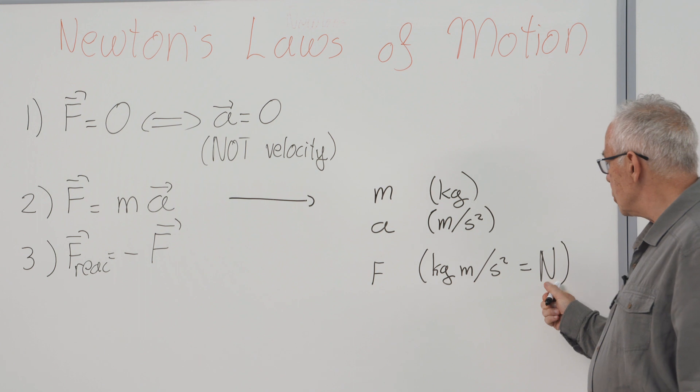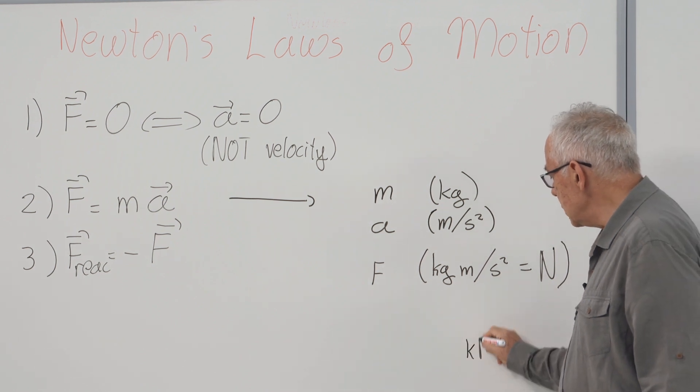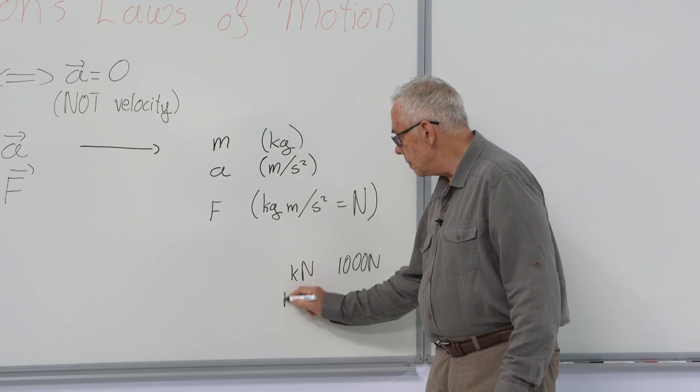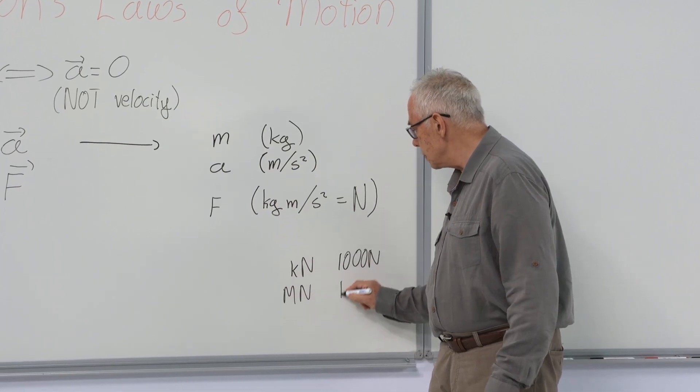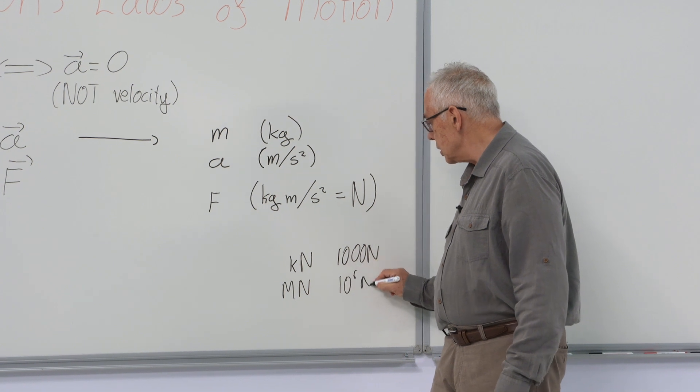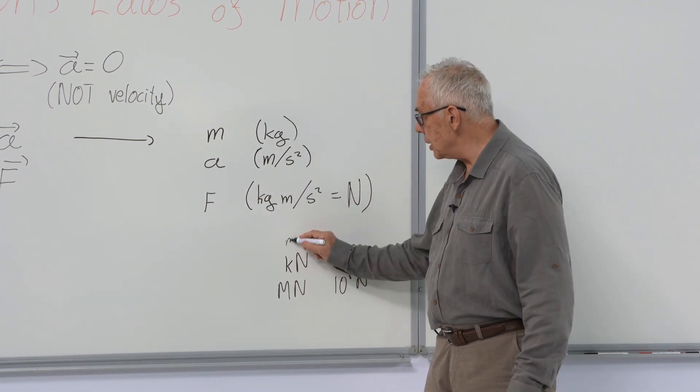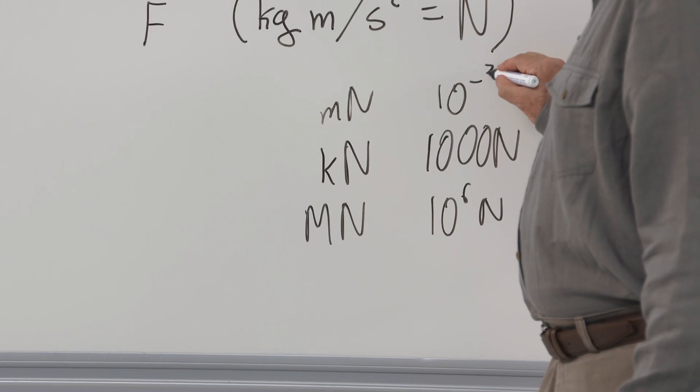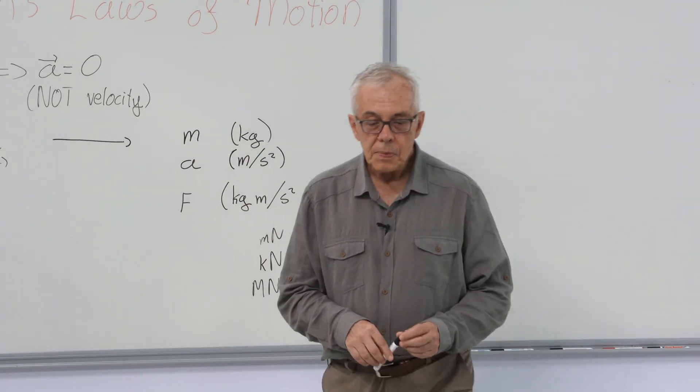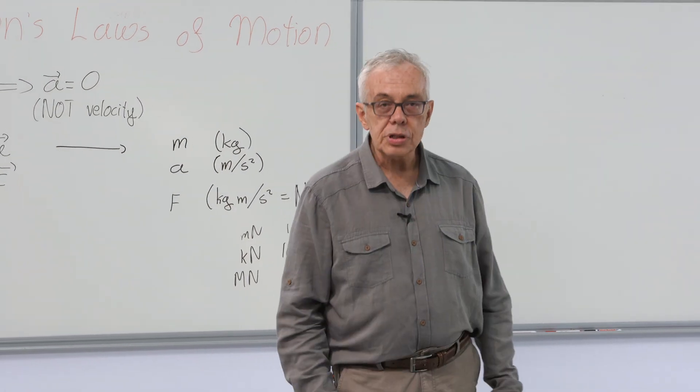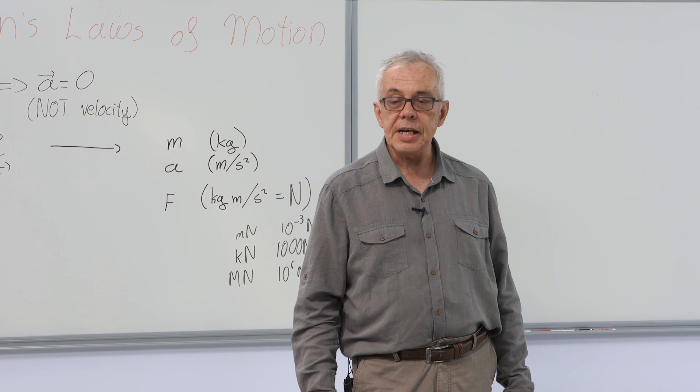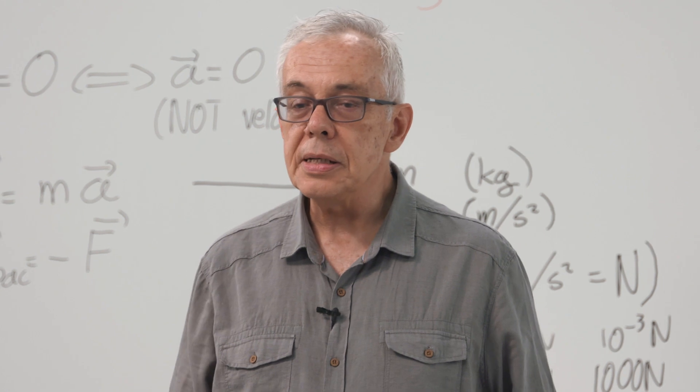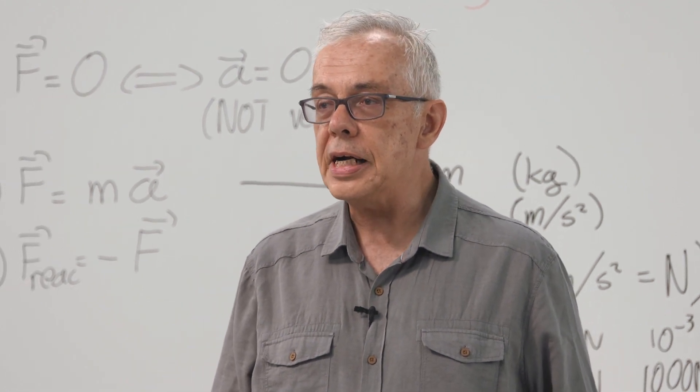Bigger and smaller units are kilonewton, which is 1,000 Newton. Meganewton, 10 to the 6 Newtons, or millinewton. When you are talking about a person pulling or pushing something, we are talking about Newtons. When you are talking about the force a locomotive exerts on a train, we are talking about kilonewtons.